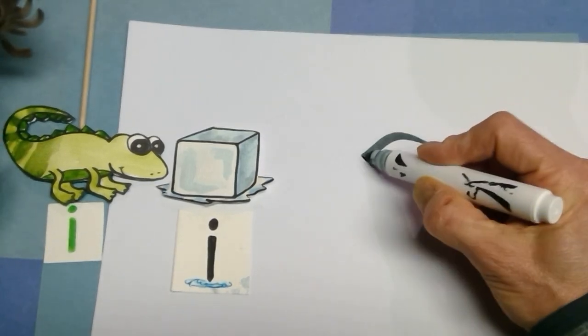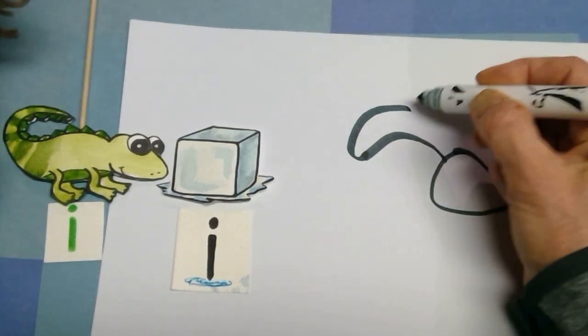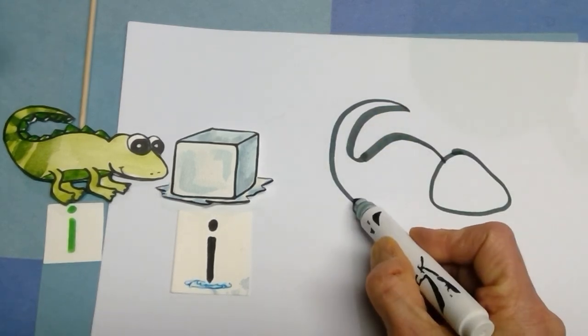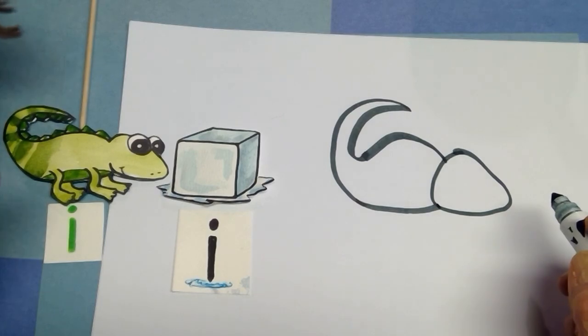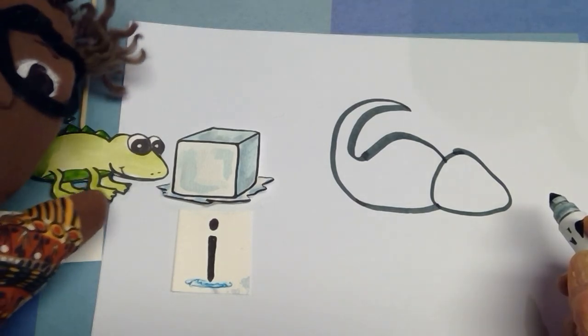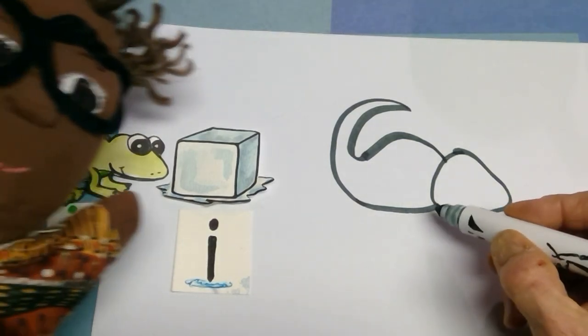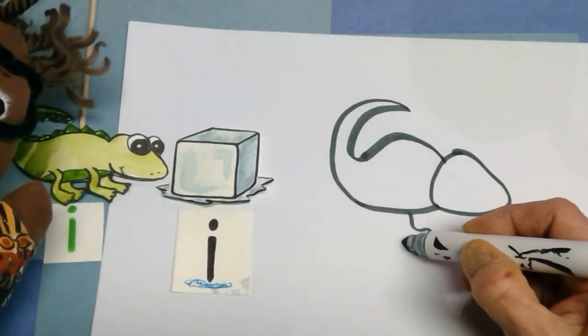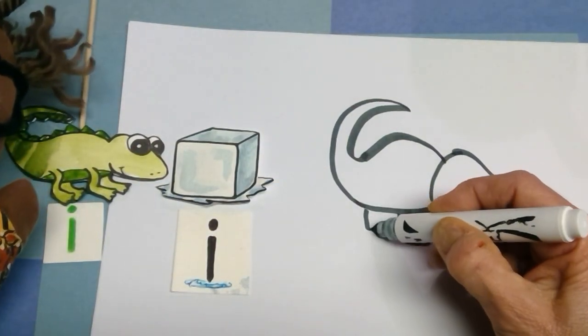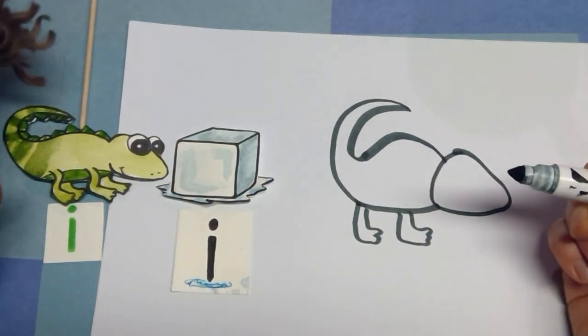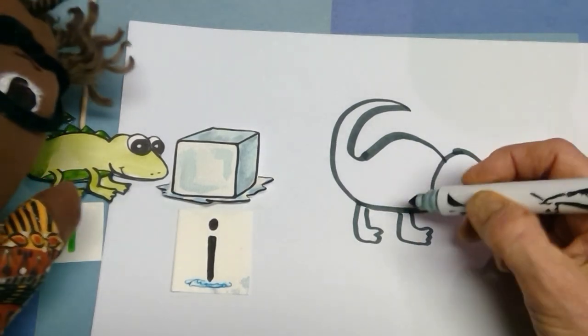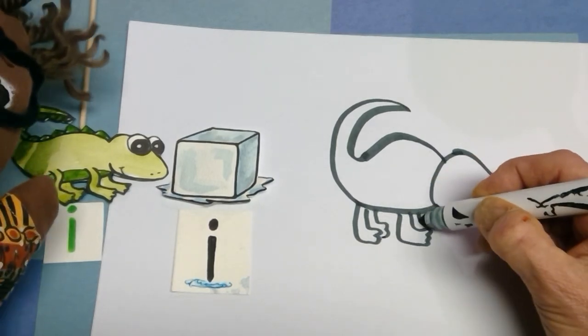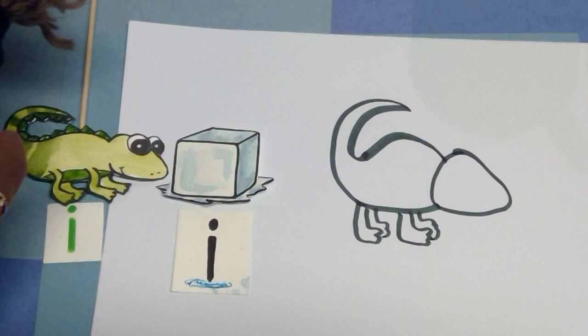Now, we're going to give him some little legs. So, he's starting here and here. Maybe a few little toes. Good. Now, we've got little legs behind there. So, start right there. And a couple little wiggly lines. Like that.